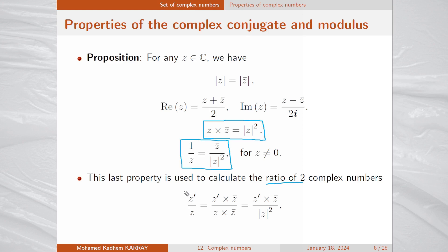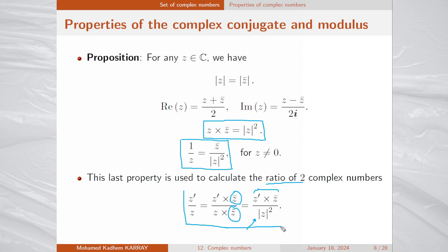When we have to calculate z prime divided by z, an interesting idea is to multiply by the complex conjugate of the denominator on both sides. We get |z| squared in the denominator and a complex number in the numerator. This gets rid of the complex number in the denominator — a very useful technique to calculate the ratio of two complex numbers.